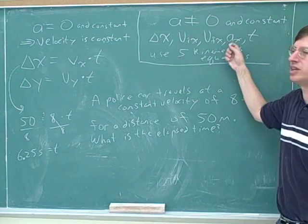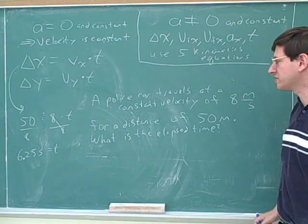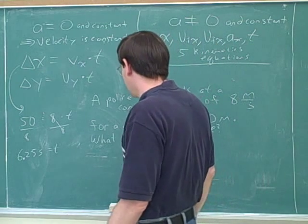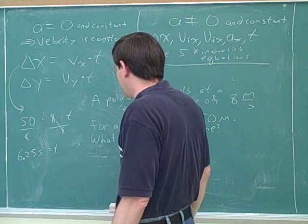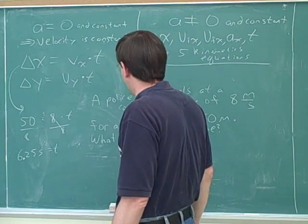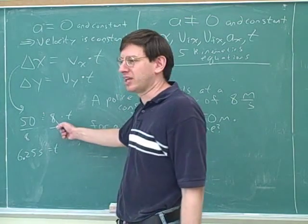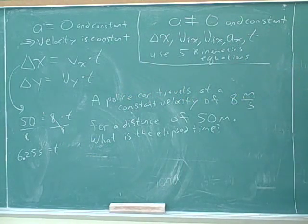Constant velocity or zero acceleration means we just use this simple equation. If the acceleration is constant and not zero, then we need the complicated kinematics equations. Okay. Good. We didn't worry about the signs here, but maybe those are so straightforward we won't spend time on that here. Basically we're just plugging in. Okay. Good. Good. So that's how we would do that.